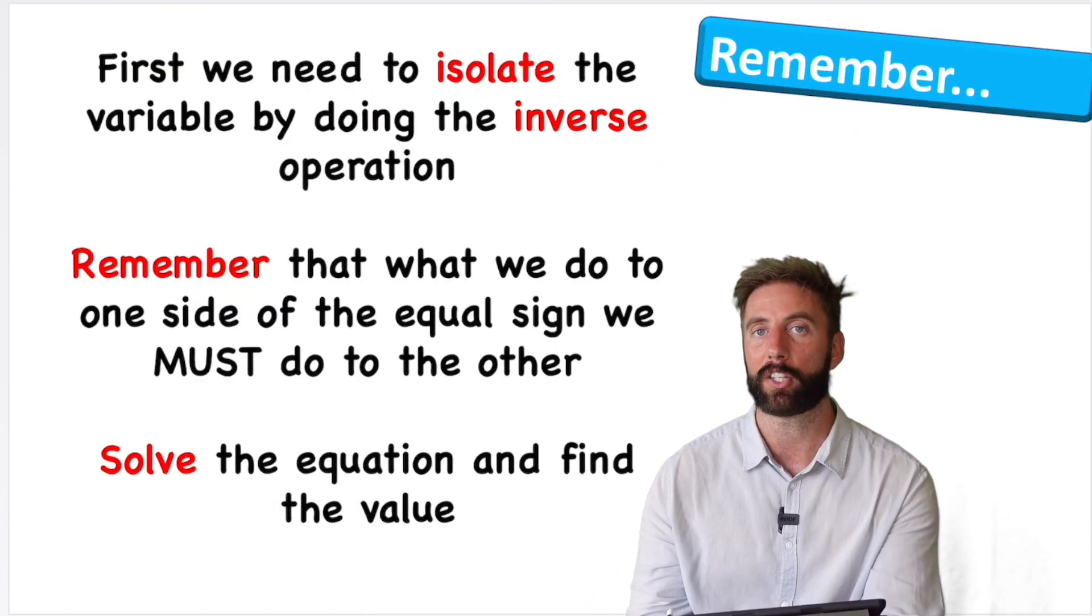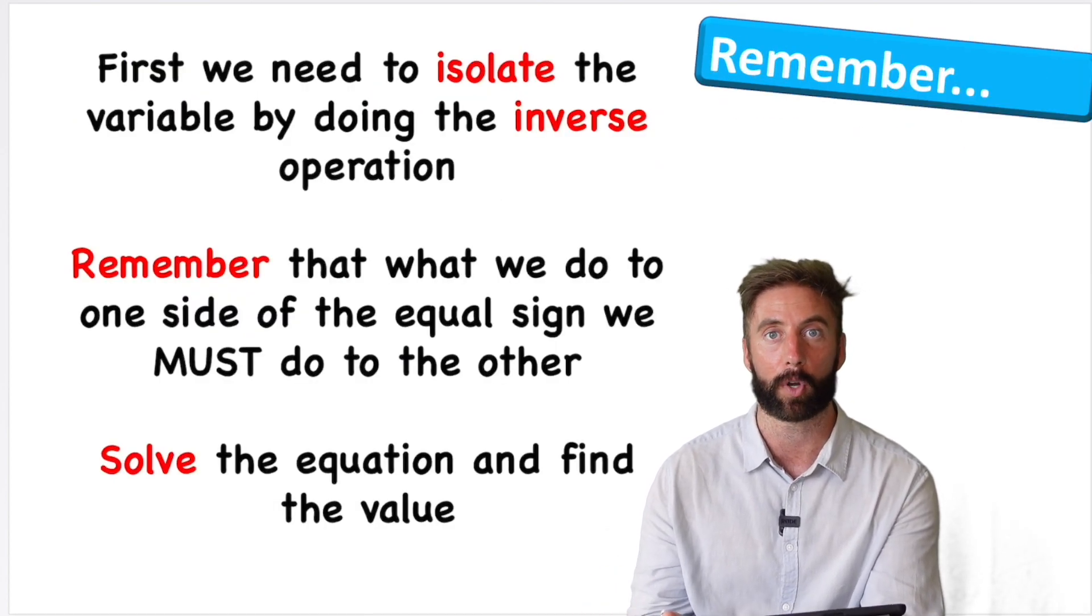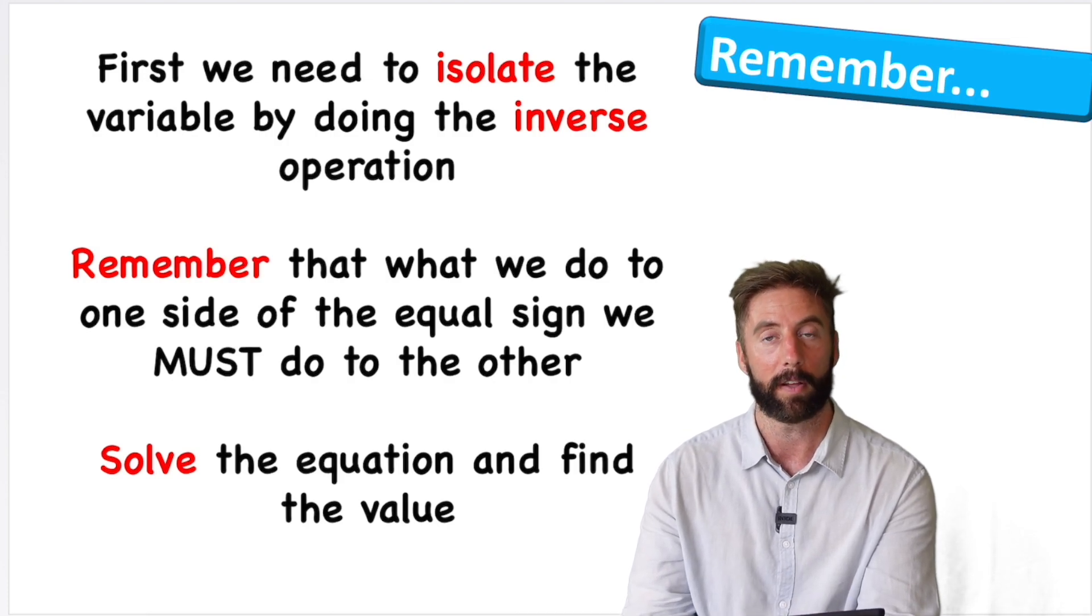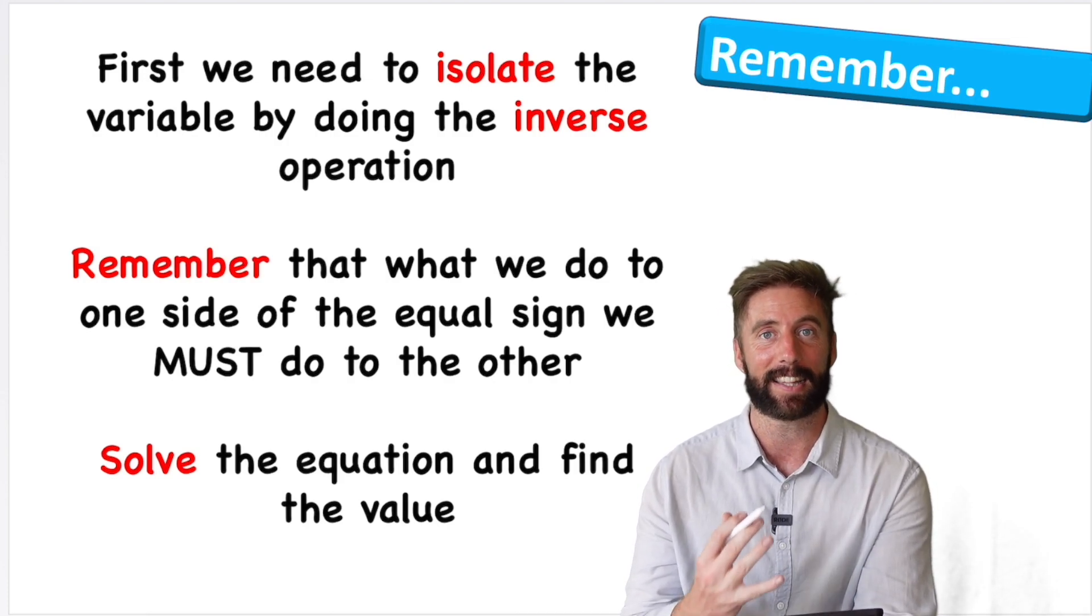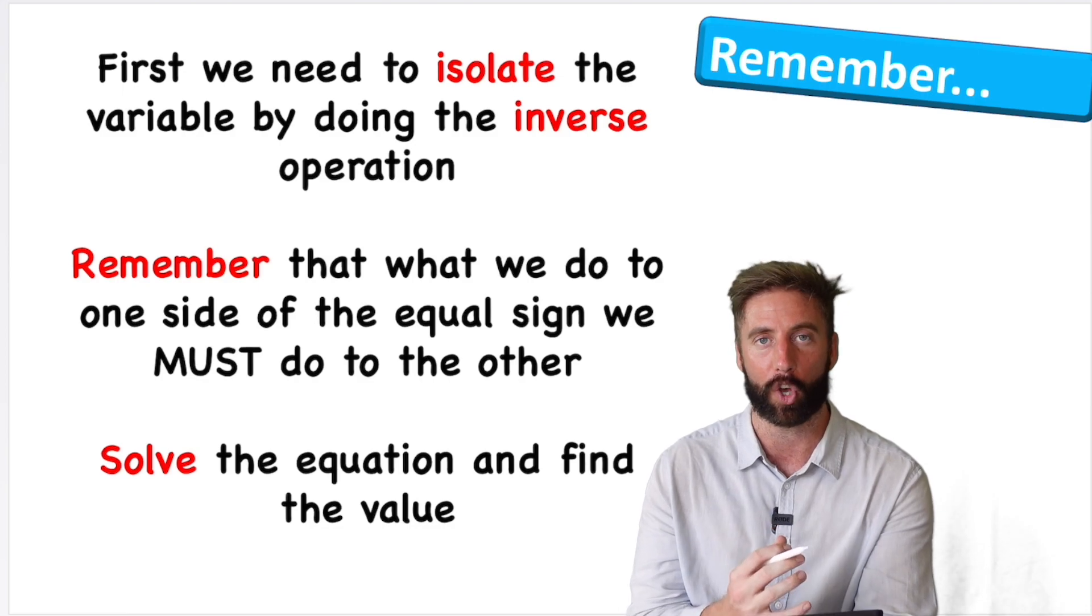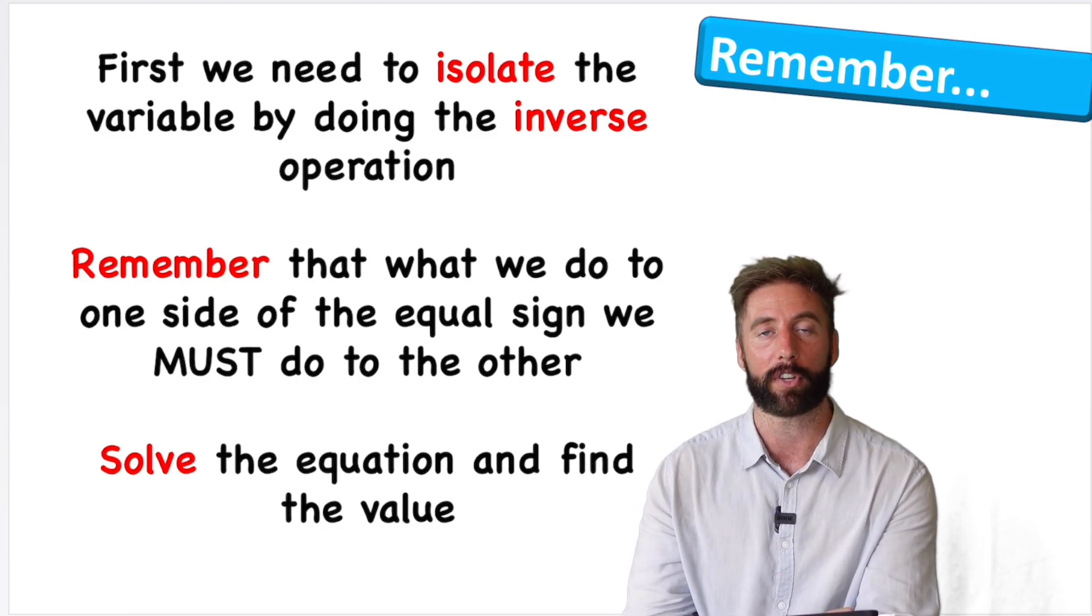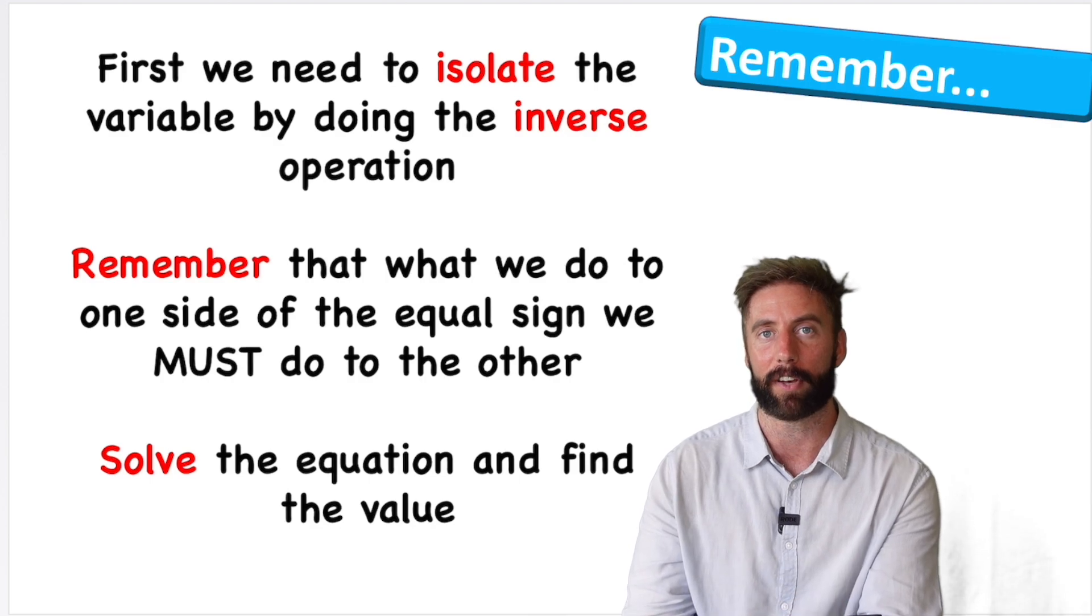So there you go. That is everything you need to know about one-step equations or missing number equations. Let's look at some things to remember. First, we're going to isolate the variable. We want that variable on its own. And the way we're going to do that is by getting rid of whatever it's attached to by adding the inverse.